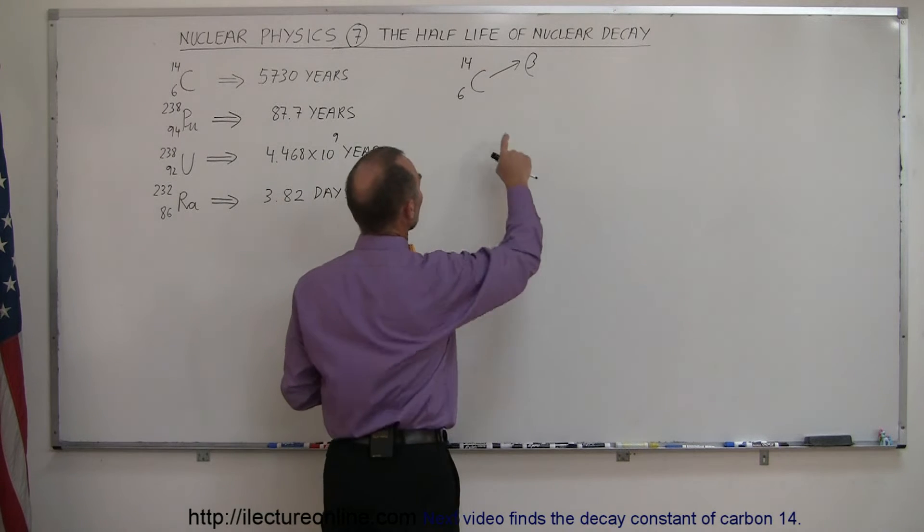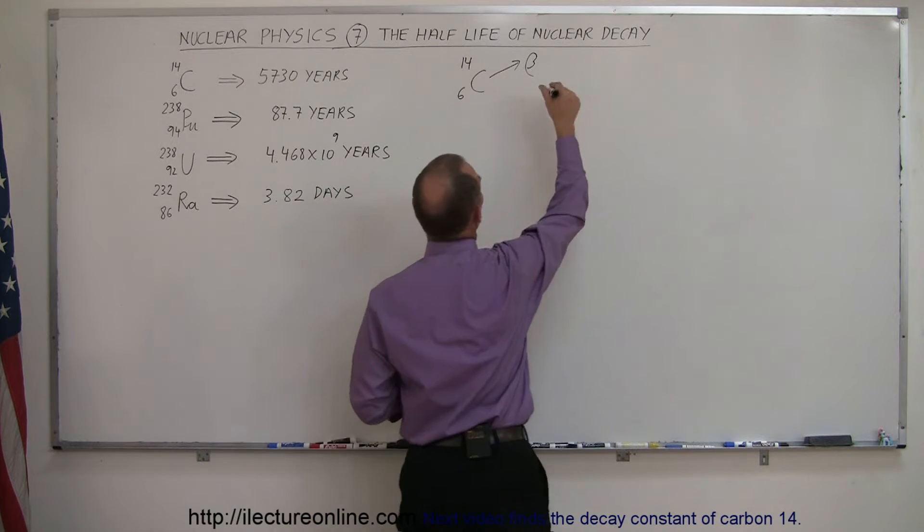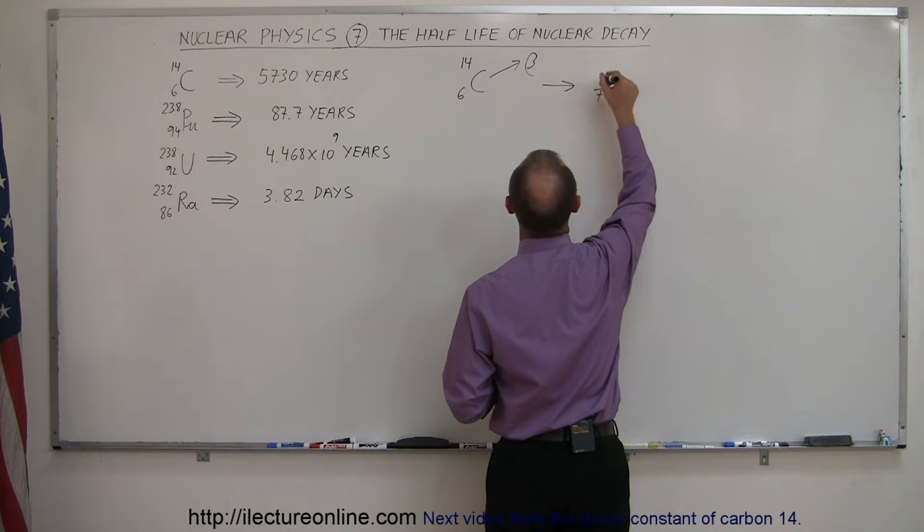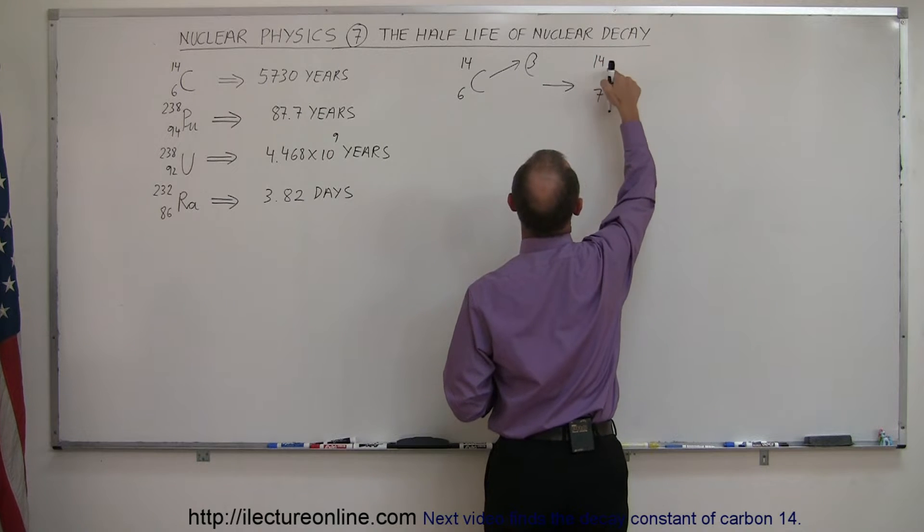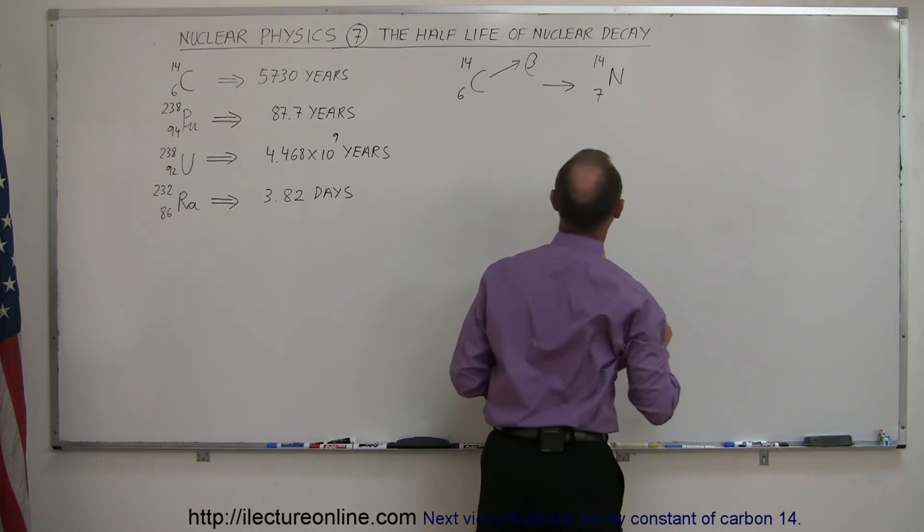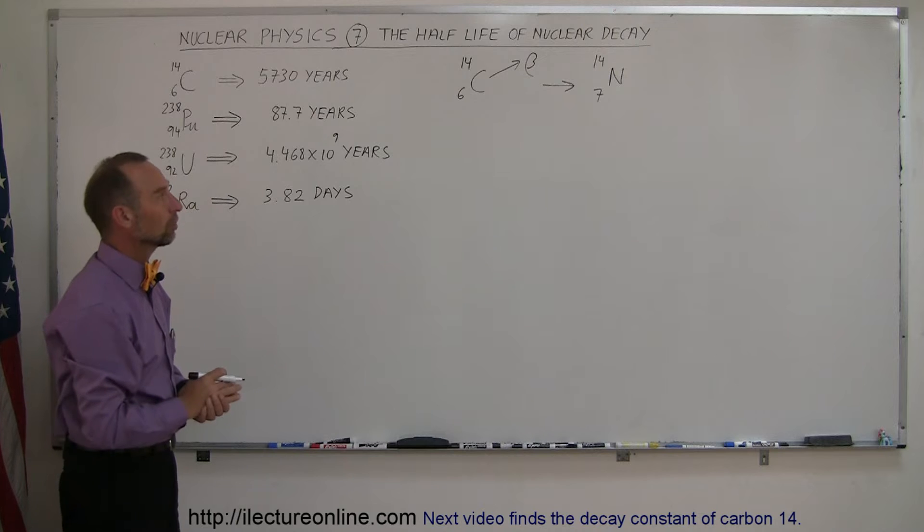If it turns into a proton, that means there are now seven protons and still 14 total nuclear particles. So this now becomes something with seven protons and 14 nucleons. And that, of course, is the element nitrogen. So carbon-14 will spontaneously change into nitrogen.